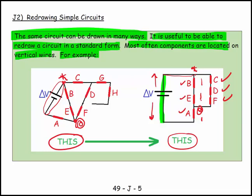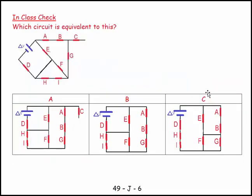So here's an example: which circuit is equivalent to this? Let's argue these out. I put my battery there, and then if I come down this piece of wire, my D is there. And then I come down and I have my H and my I.